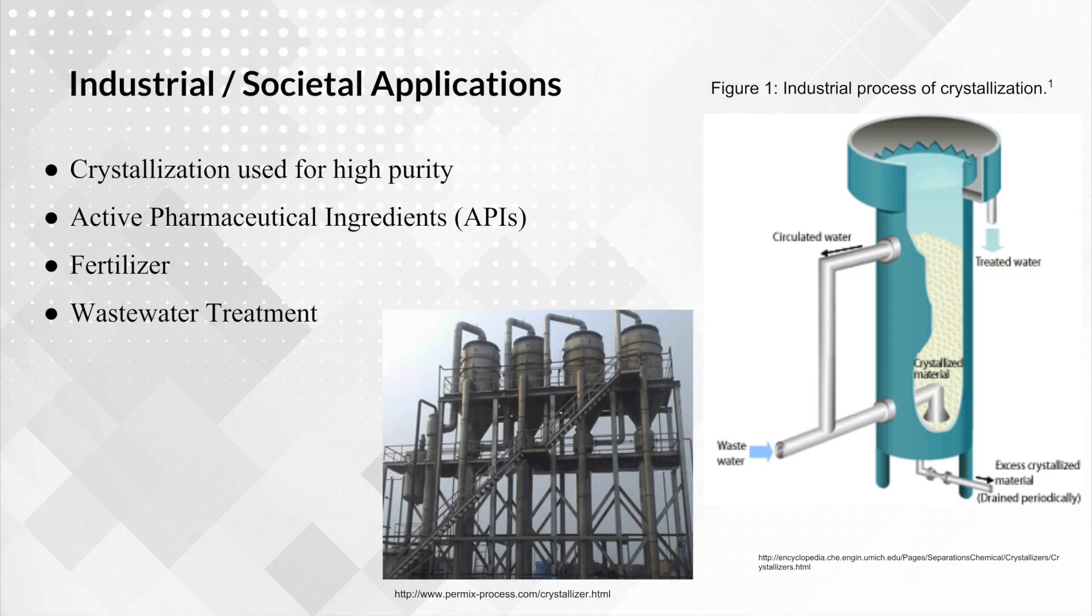In the industrial setting, crystallization is used primarily to recover high-purity products. In the pharmaceutical industry, it's used for active pharmaceutical ingredients, or APIs. In the fertilizer industry, it's used often to recover products like urea. And in the wastewater industry, it's used for recovering of phosphates. As you can see in the bottom, the picture is right here. There is a schematic for a crystallization process, as well as a picture of what it looks like in industry.